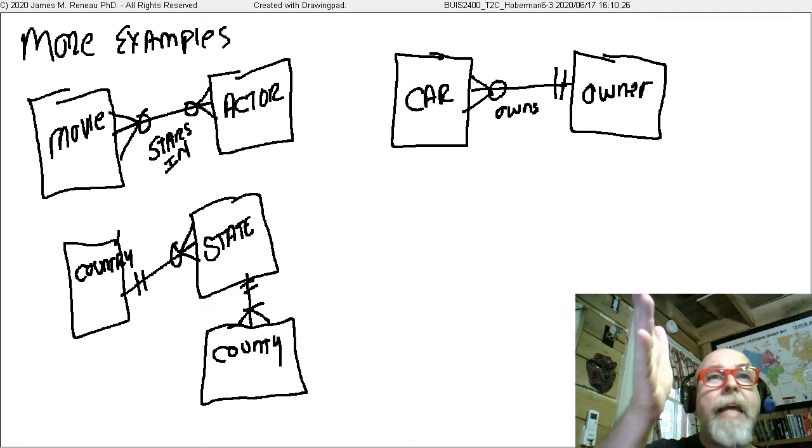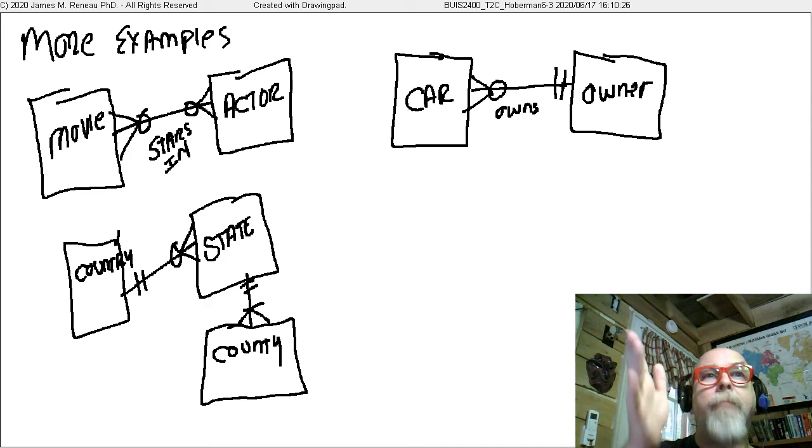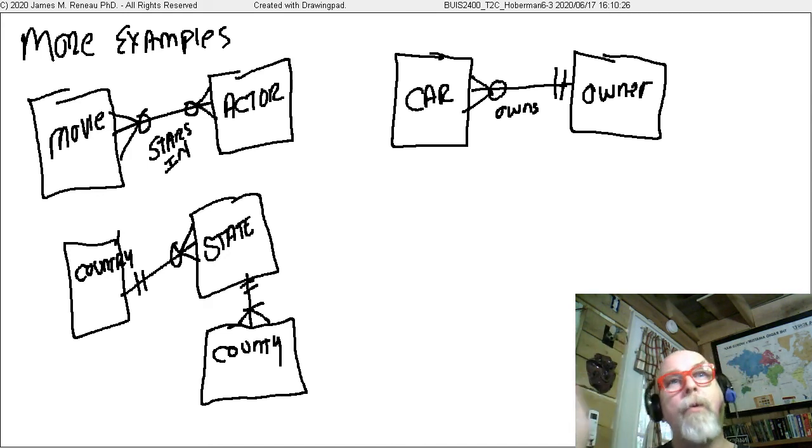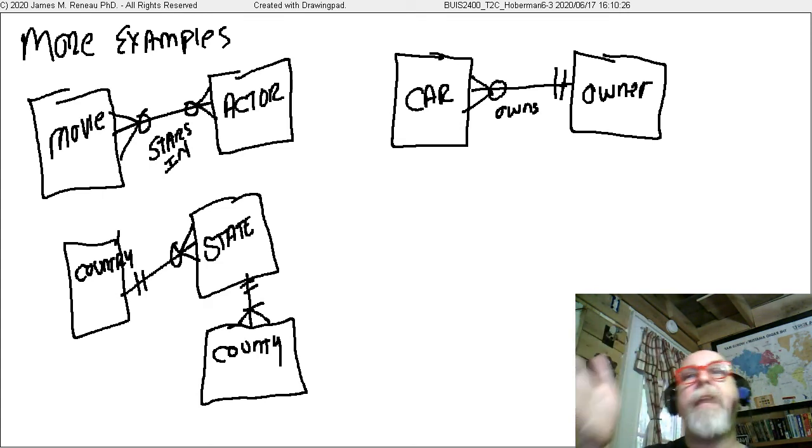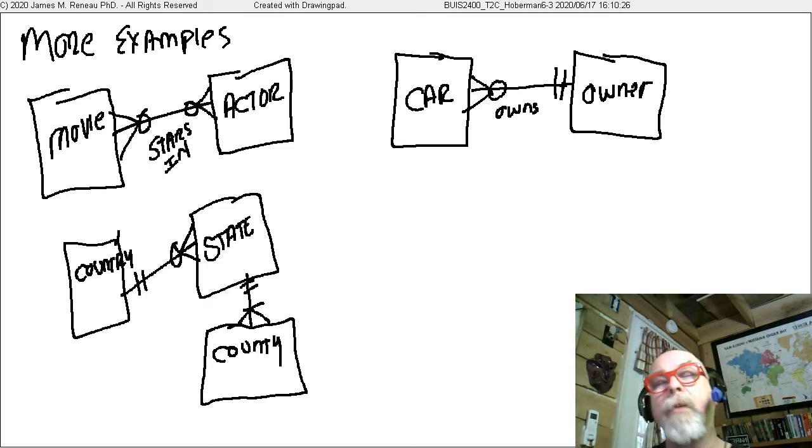But a state, Ohio, Kentucky, Texas, Rhode Island, belong to one and only one country. So a country can be made up of zero or more states, but a state belongs to one and only one country. Let's think about counties within states. A state can have one or more counties in the state, and a county belongs to one state. Scioto County, Ohio, Boyd County, Kentucky.